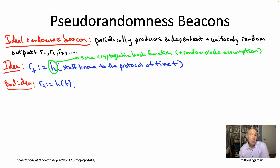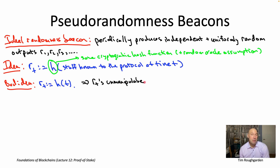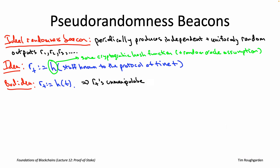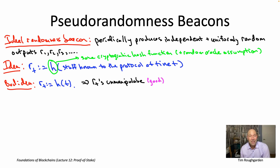An initial idea — which I'm going to be honest is a bad idea — is to just hash whatever the current time step is. This is certainly something the protocol could do, and actually a couple of early proof-of-stake blockchain protocols used exactly this approach. The good news is that the R_t's are completely unmanipulable by anybody: the cryptographic hash function is baked into the protocol, and the time step just is the time step. The obvious issue is that at the time of protocol deployment, at time step t=0, already everybody knows what R_t is going to be for the rest of time — all of the R_t's are completely predictable in advance.